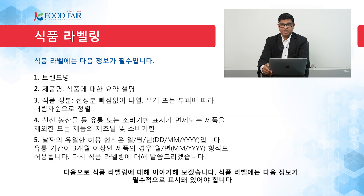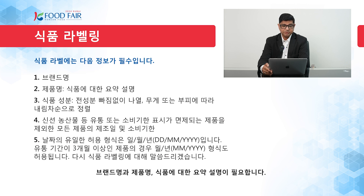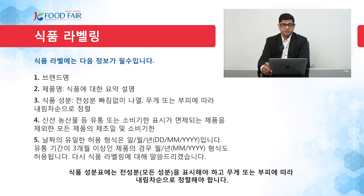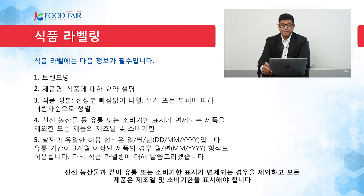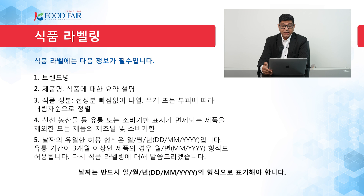Now let's talk about food labeling. The following information is mandatory on the food label: brand name, product name, and a summarized description of the food product. Food ingredients, arranged in descending order according to weight or volume — all ingredients should be listed. Production and expiration dates are required for all products except those exempted from displaying validity or expiration dates, such as fresh produce. The only accepted format of dates is DD/MM/YYYY — day, month, and year.